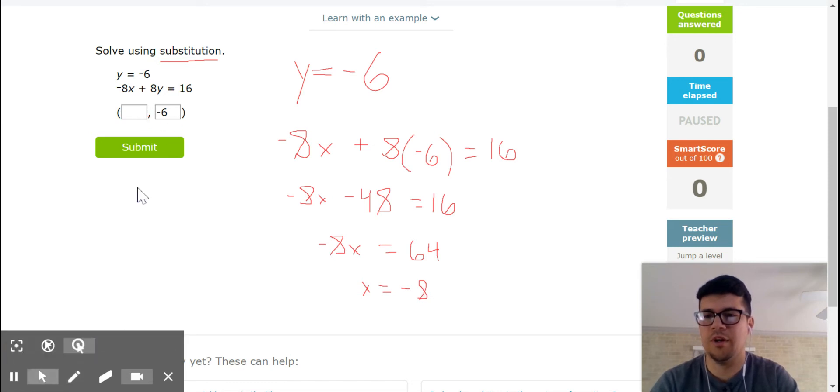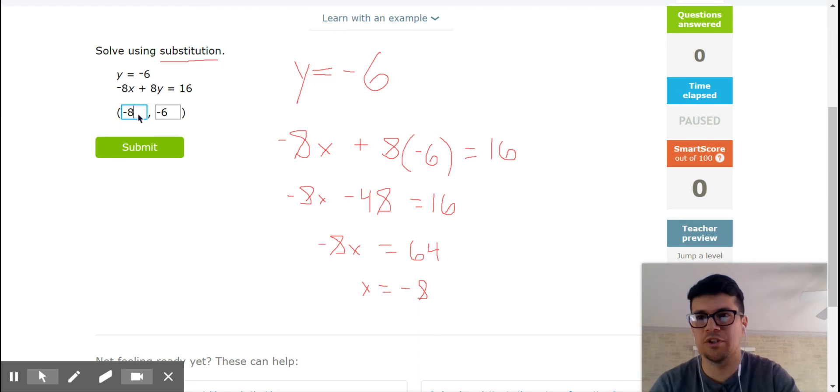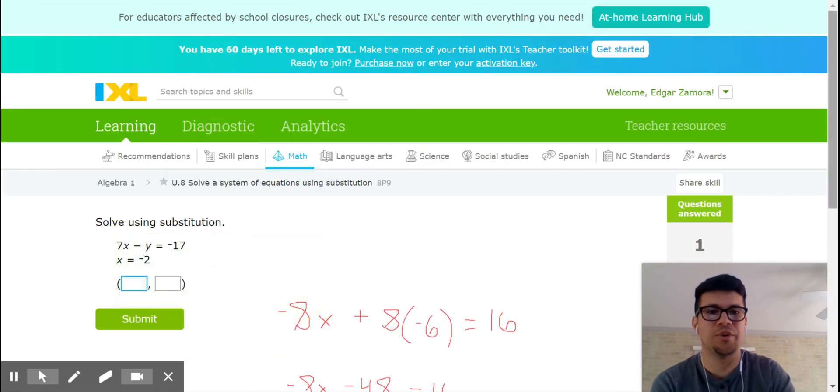And we go ahead and enter this, claiming that our solution is (-8, -6). We could also check this by graphing, and we would see that this is the ordered pair where these two equations, these two functions intersect. Submit that, it says we're terrific.